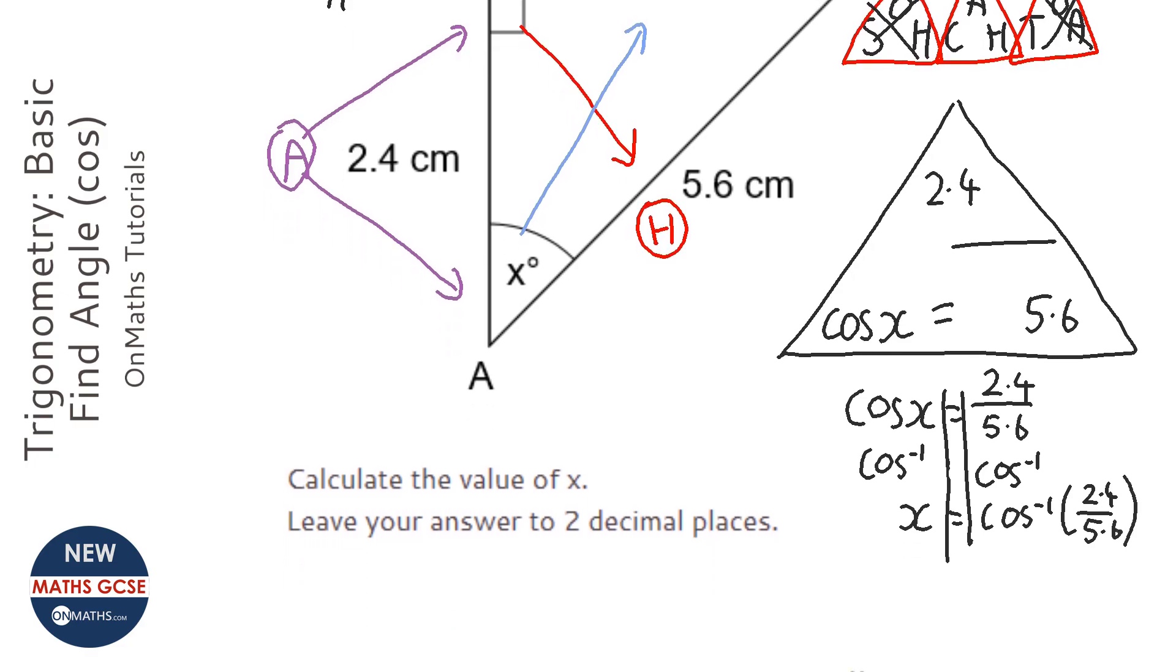To get the inverse cos, we need to type in shift or second function and cos to get the inverse cos. Then I'm going to press the fraction button, 2.4, cursor button down, 5.6, cursor button right, and make sure you close the bracket, otherwise the calculator will not like it.